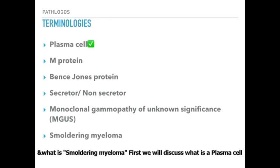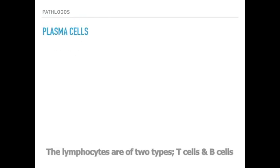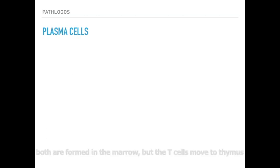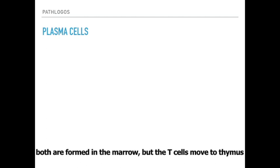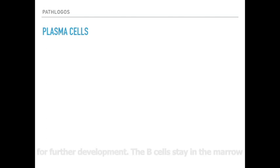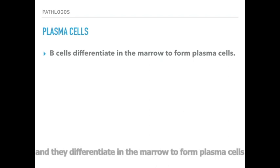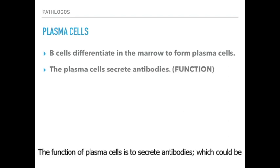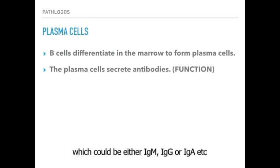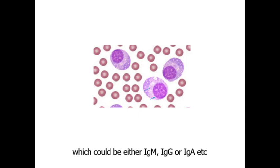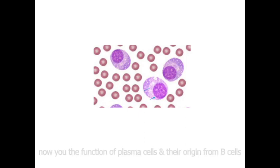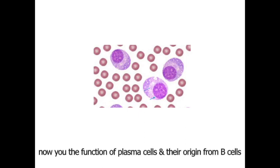First we'll discuss what is the plasma cell. The lymphocytes are of two types: T cells and B cells. Both are formed in the marrow but the T cells move to the thymus for further development. The B cells stay in the marrow and they differentiate to form plasma cells. The function of plasma cells is to secrete antibodies which could be either IgM or IgG antibodies.